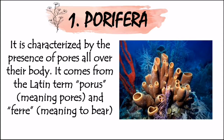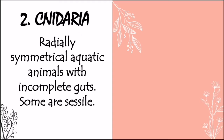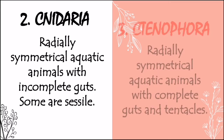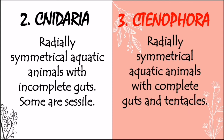Moving on, we also have Cnidaria, which are radially symmetrical aquatic animals with incomplete guts, and Ctenophora, which are radially symmetrical aquatic animals with complete guts and tentacles. The major difference between the two is that Cnidaria has incomplete guts, while Ctenophora has complete guts as well as tentacles. When talking about sessile organisms, these are stationary organisms. Ctenophora is also characterized by a large central cavity known as gastrovascular cavity. It comes from the Greek terms koilos, meaning hollow, and enteron, meaning intestine.